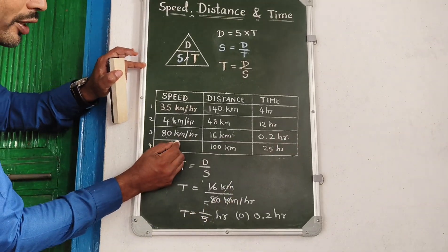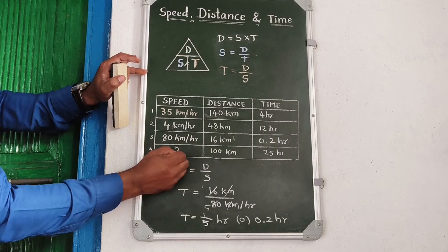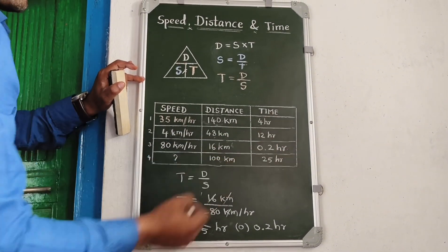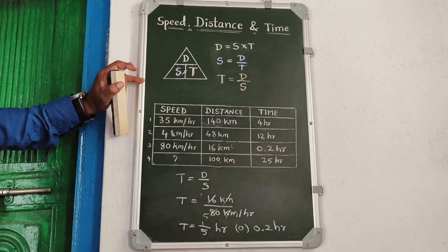What is the speed if distance is 100 km and time is 25 hours?